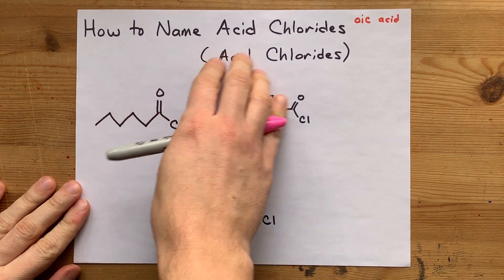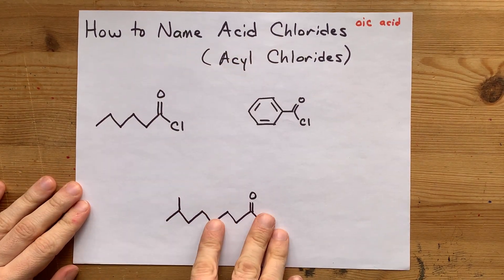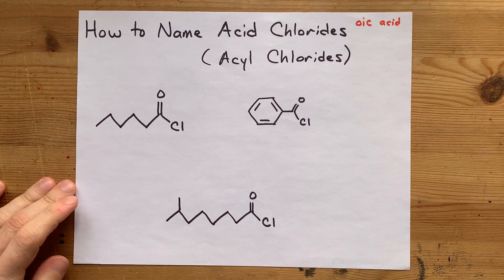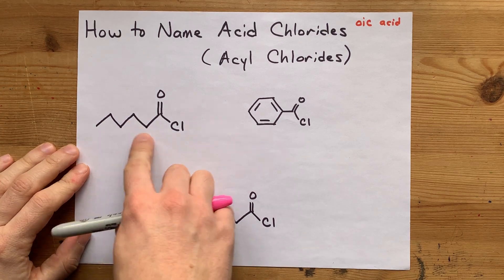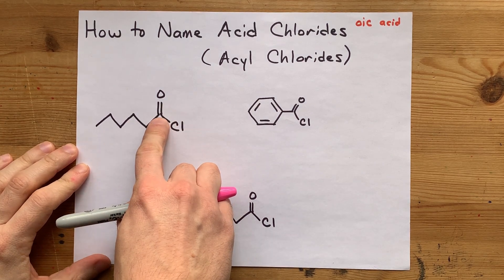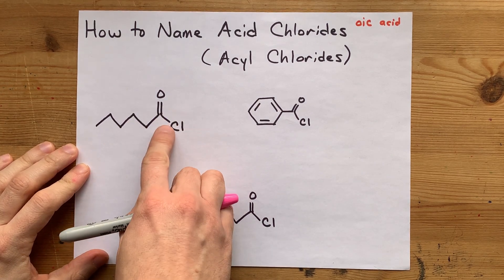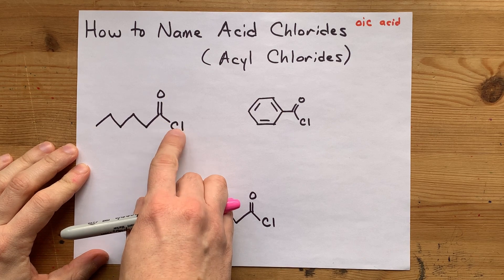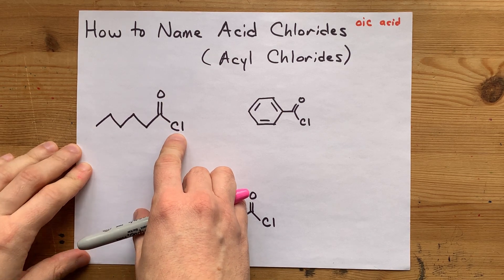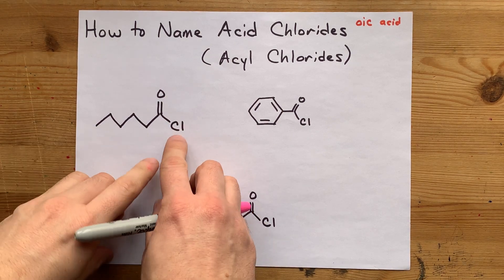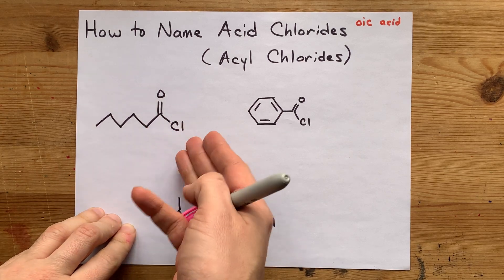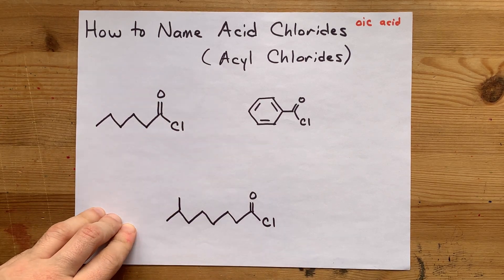How do you name acid chlorides in organic chemistry? These molecules have a double-bonded O at the end of the chain and also have a chlorine atom. That chlorine looks like it could be an OH if this had been a carboxylic acid.